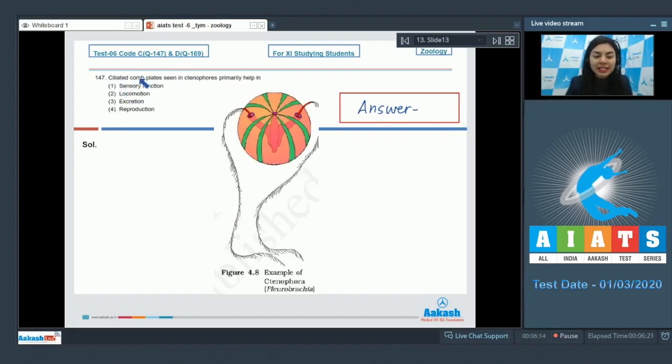Question 147. Ciliated comb plates seen in ctenophores primarily help in: sensory function, locomotion, excretion, or reproduction. If you look at the body structure of a typical ctenophore, we can see these eight green structures. These are called comb plates, and they are called comb plates because each one of these external rows have cilia on them, which gives an appearance similar to that of a comb.